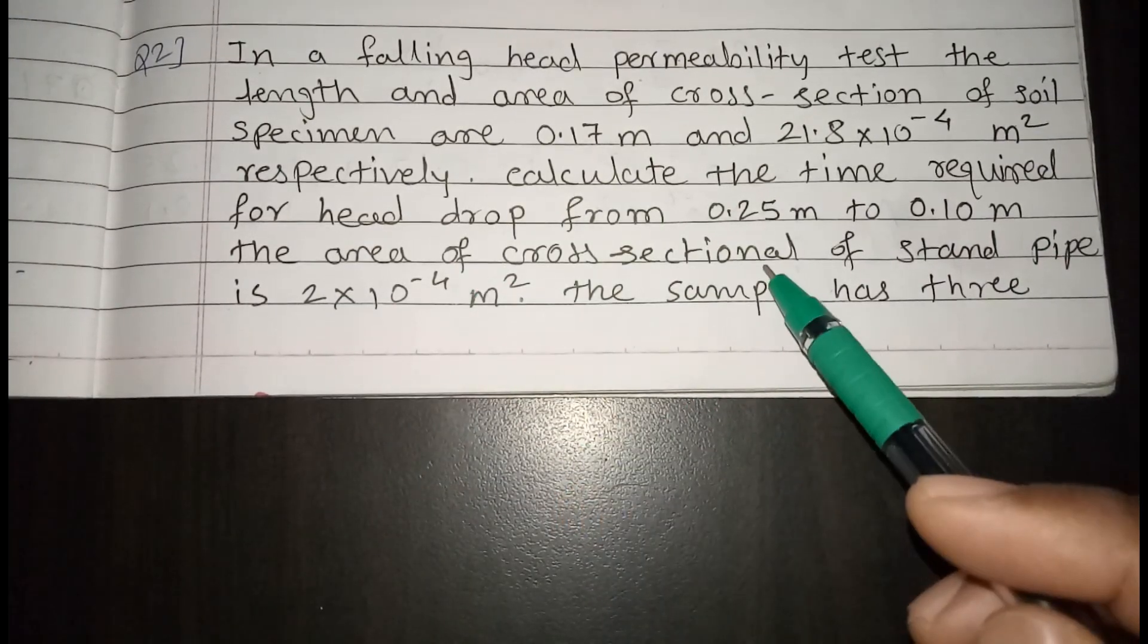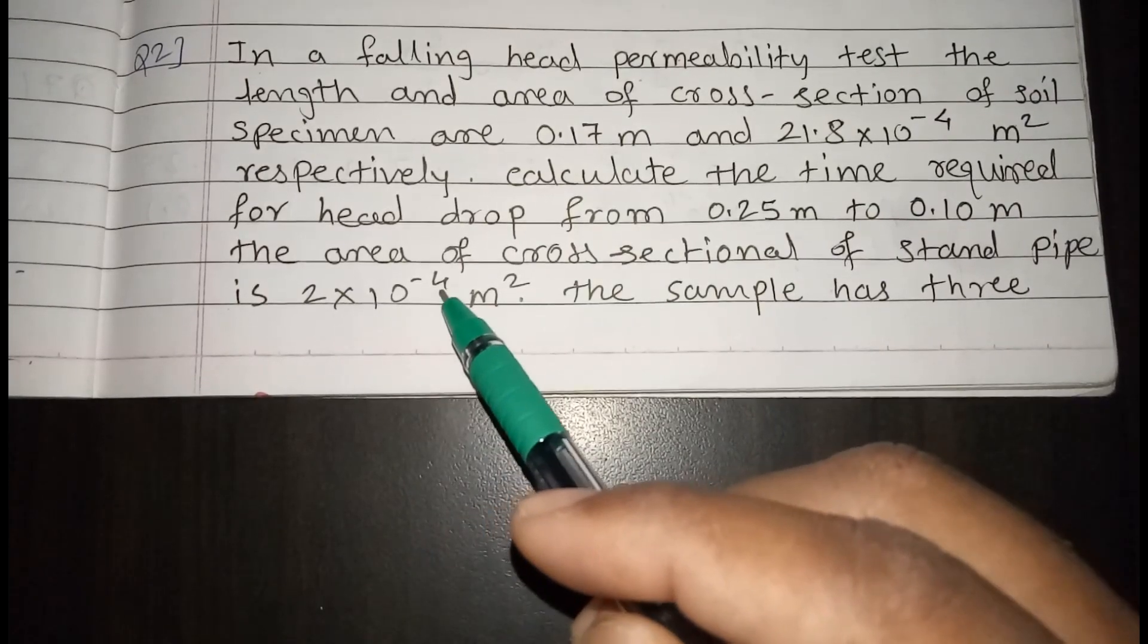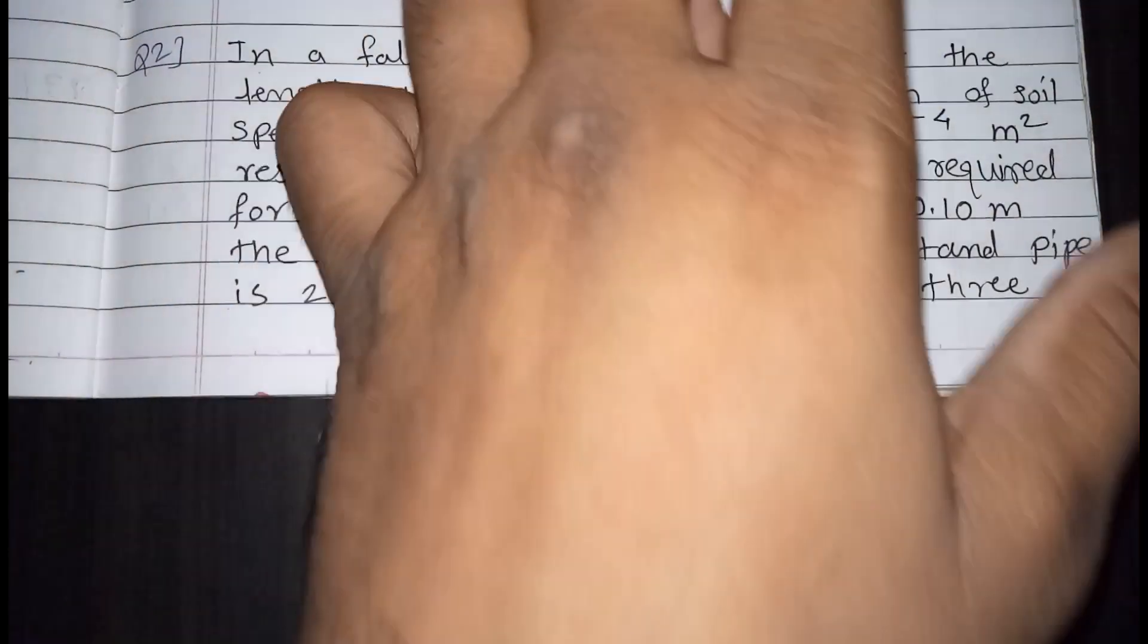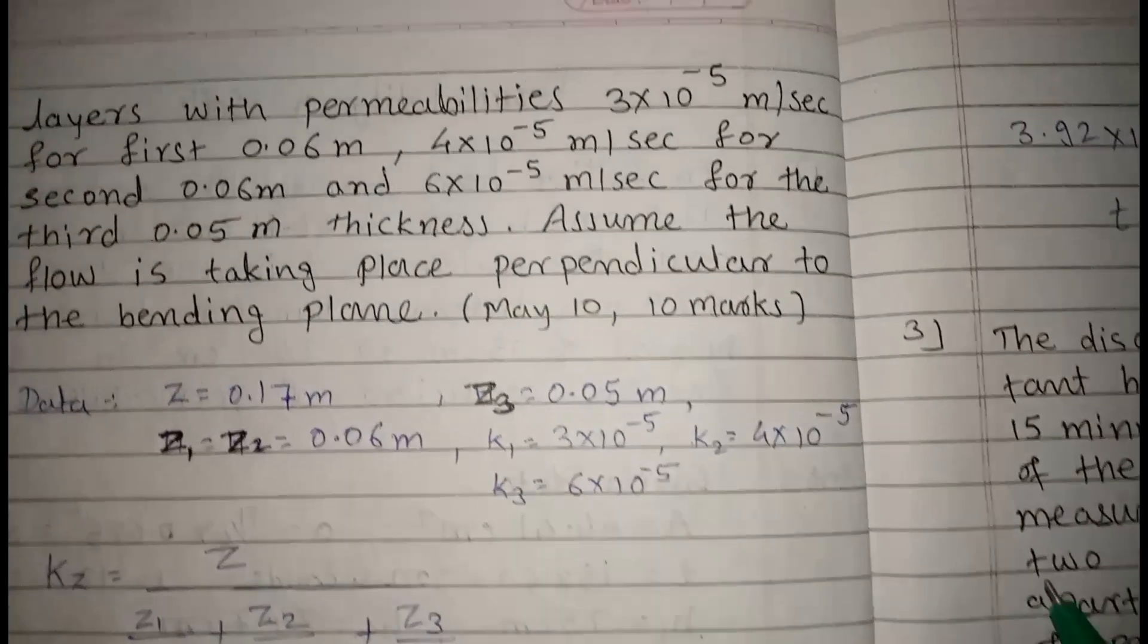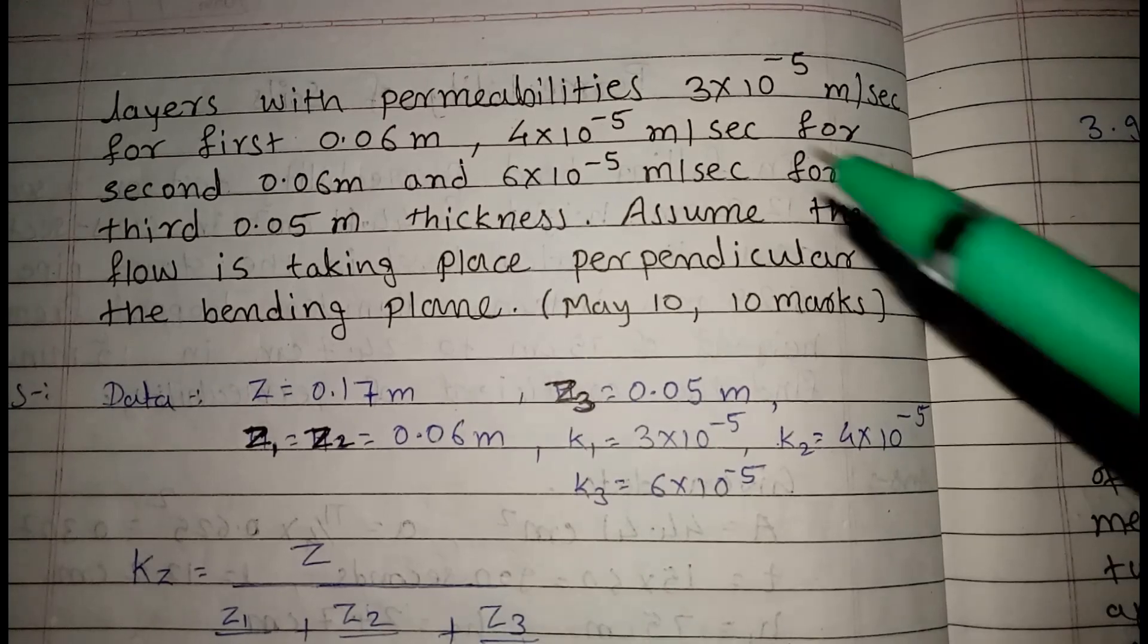The area of cross section of stand pipe is 2 into 10 raise to minus 4 meter square. The sample has 3 layers with permeabilities.